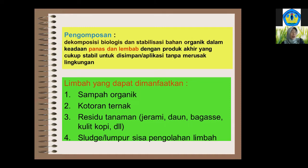Sludge bisa dimanfaatkan untuk kompos dengan mencampurkan residu tanaman misalnya kulit kopi atau jerami sebagai bulking agent, yang bisa menyebabkan sludge menjadi lebih kering sehingga masuk ke dalam kondisi optimum untuk dikomposkan. Percobaan terakhir kami mencampur sludge dengan kulit kopi, karena kulit kopi sebagai bulking agent membuat porositas campurannya lebih baik sehingga aerasinya lebih baik.